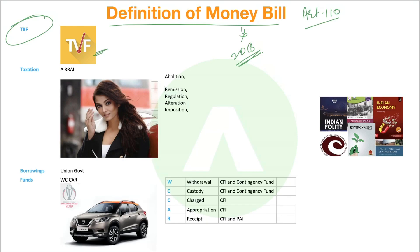In TBF, T stands for Taxation, B stands for Borrowings, and F stands for Funds. Taxation has a lot of keywords attached to it in the definition. To remember these, imagine Aishwarya Rai has to pay a lot of tax — so A Rai: A is for Abolition, R for Remission of taxes, the next star is for Regulation, then A for Alteration of any taxes, and I for Imposition of any taxes. All of this constitutes the definition of a money bill.